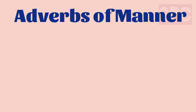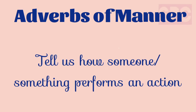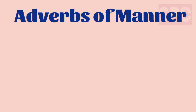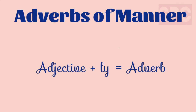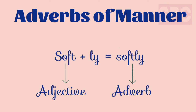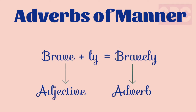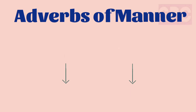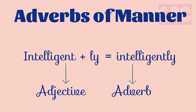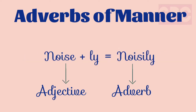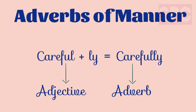Adverbs of manner tell us how someone or something performs an action. Adverbs of manner are formed by adding '-ly' to adjectives. For example, the adjective 'soft' becomes the adverb 'softly', and the adjective 'brave' becomes the adverb 'bravely'. Some more examples are: quickly, intelligently, noisily, carefully, etc.